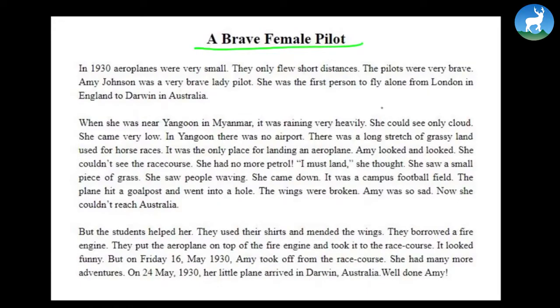A brave female pilot. In 1930s, aeroplanes were very small. They only flew short distances. The pilots were very brave. Amy Johnson was a very brave lady pilot. She was the first person to fly alone from London England to Darwin in Australia.